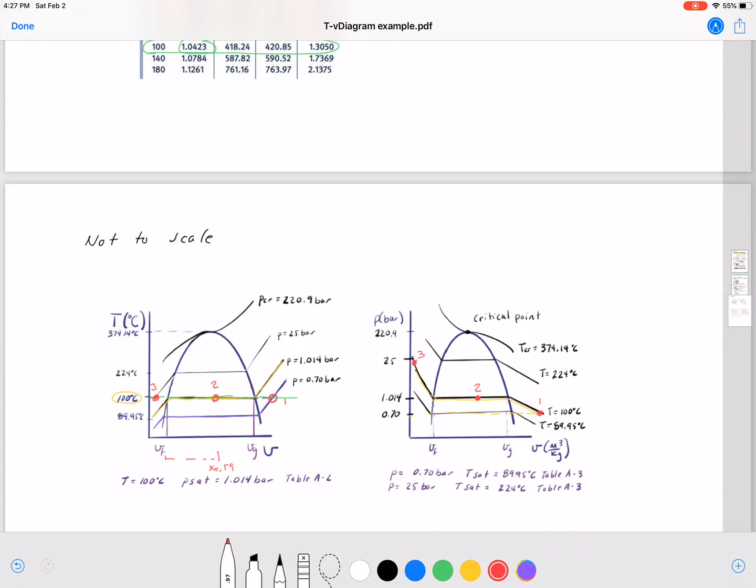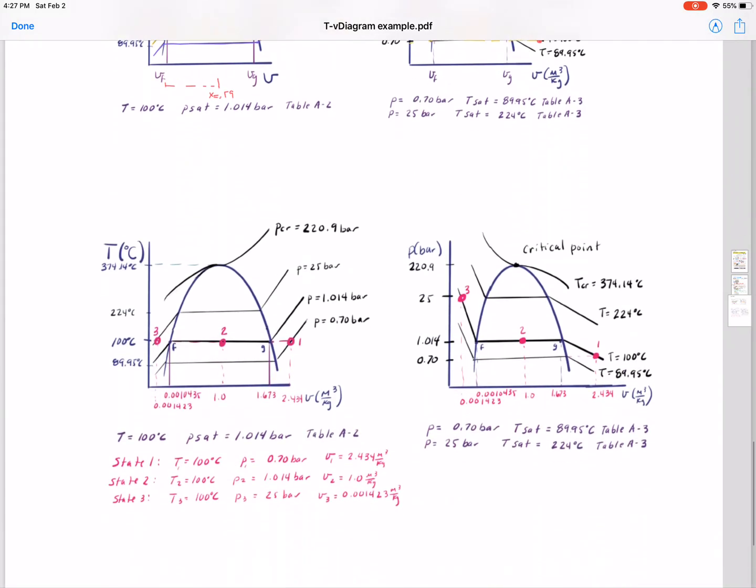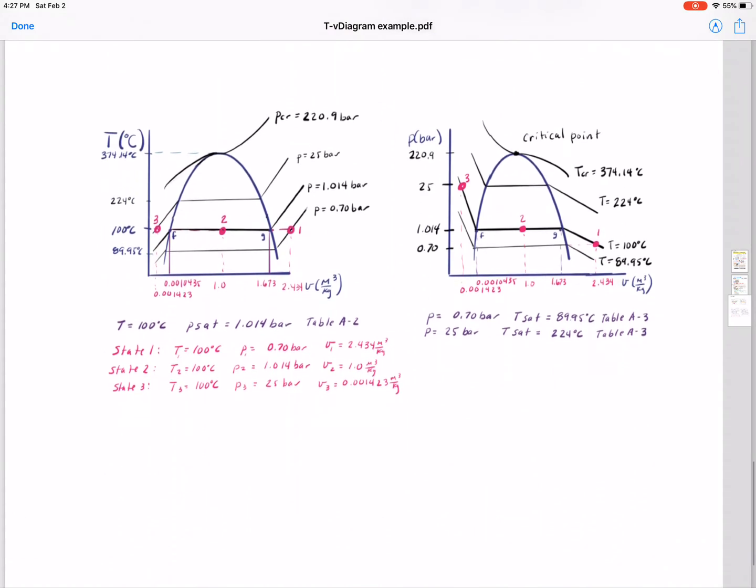So I've drawn this a little bit better for you and have all the values put on here. We can see state one has a temperature of 100 degrees Celsius, pressure of 0.7 bar, and then a specific volume of 2.434 meters cubed per kilogram. You can find our internal energy and enthalpy and so on using our charts as well.